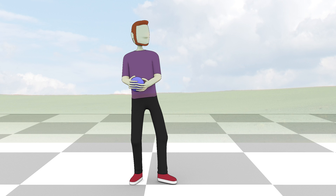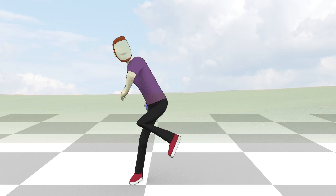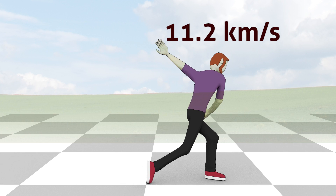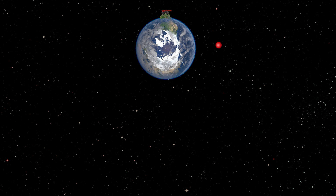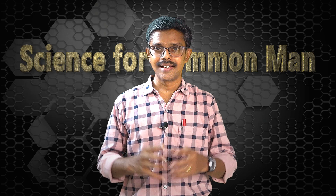The speed beyond which an object leaves earth is termed as escape velocity, and it is 11.2 km per second at sea level. So if you are strong enough to throw something with a speed higher than 11.2 km per second from sea level, you can send that object out of earth to deep space.